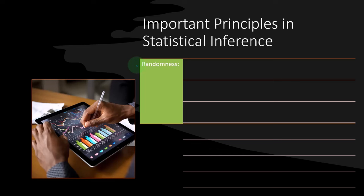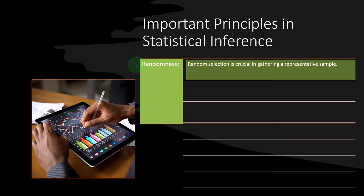So randomness, random selection is crucial to gathering the representative sample. This key is going to come up again and again. If we're trying to say I want to take a sample that's going to tell me something about the entire population, I generally have to use randomness in some way, shape or form to pick the sample.